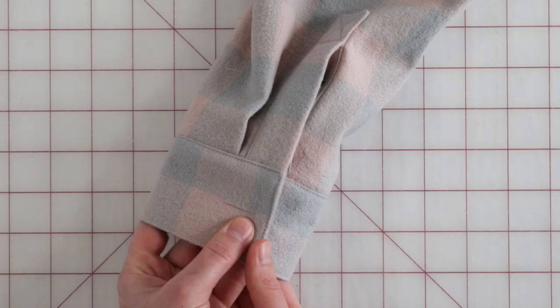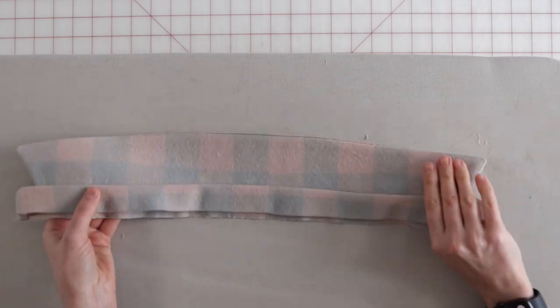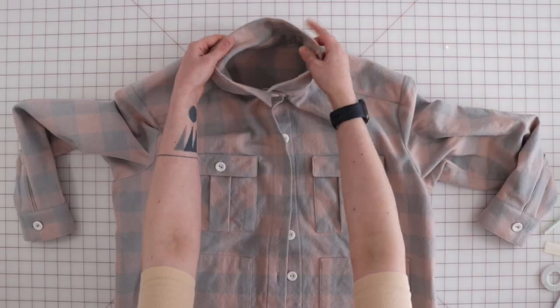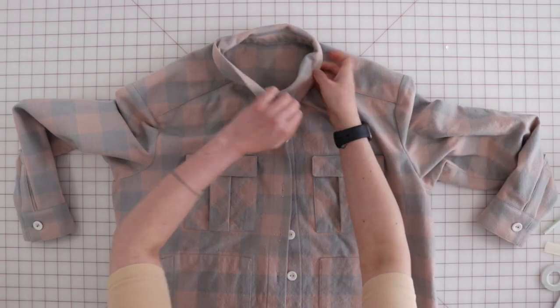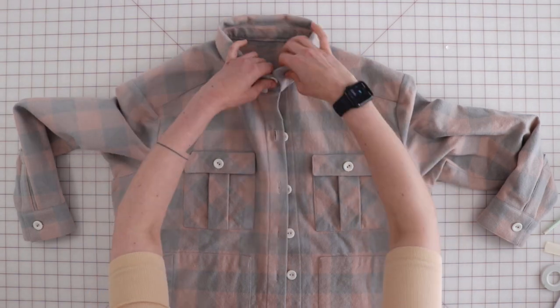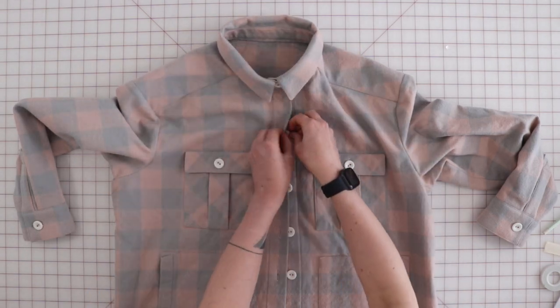Sleeved cuffs and plackets and collars and collar stands are fiddly areas that can stretch out and become hard to sew if cut on the bias. Just match these areas as best as you can and move on.